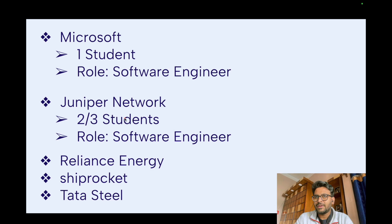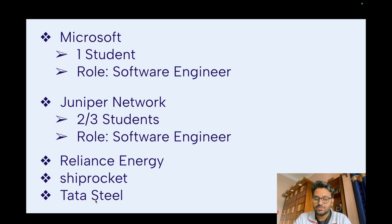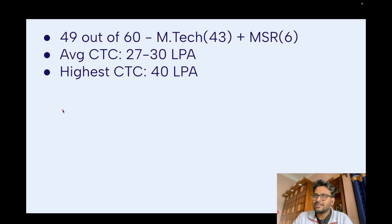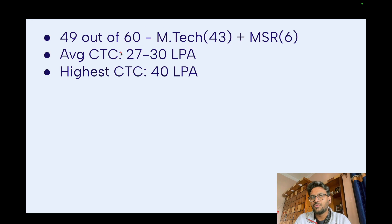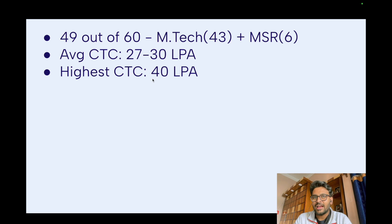Apart from these, many startups and other companies also visited campus — including Reliance Energy, ShipRocket, and Tata Steel — but I don't have exact numbers or roles for them. Overall, the data I gathered up to December 15th shows 49 out of 60 students got placed: 43 from M.Tech and 6 from MS. The average CTC was 27 to 30 LPA and the highest CTC was 40 LPA.